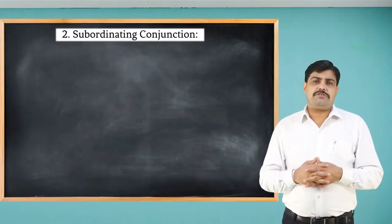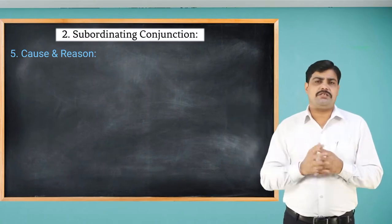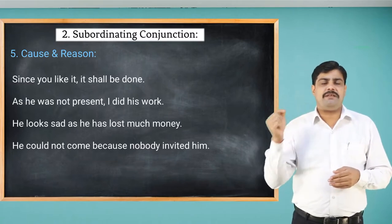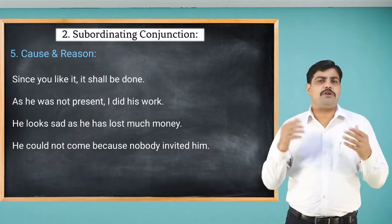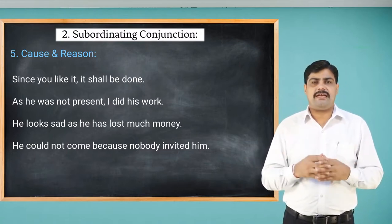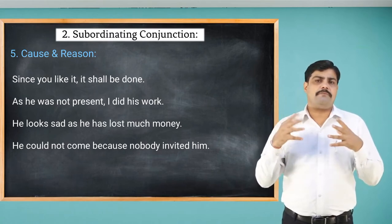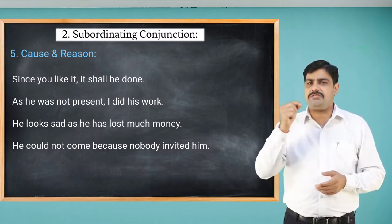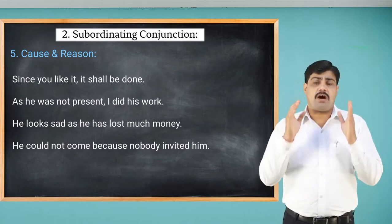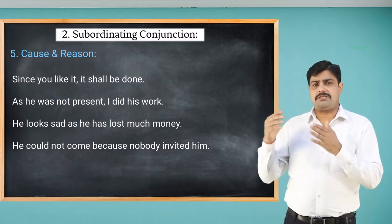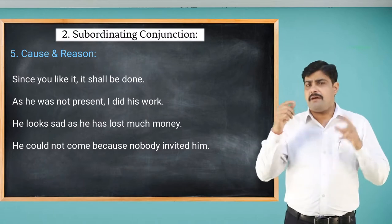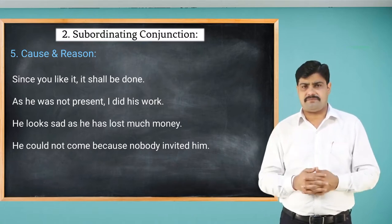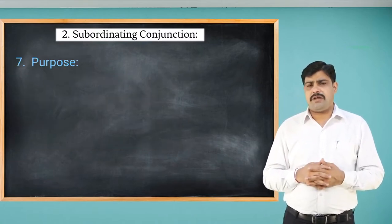We also use conjunctions for cause and reason. Here are some sentences: 'Since you like it, it shall be done.' 'As he was not present, I did his work.' 'He looks sad as he has lost much money.' 'He could not come because nobody invited him.' In each of these sentences, since, as, and because are used for cause and reason.